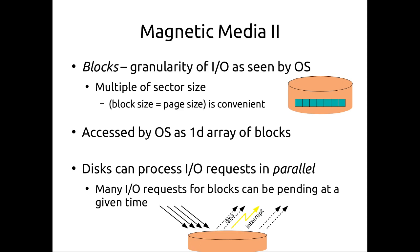The disk provides an abstraction to the OS as a 1D array of blocks — the teal array you see on the right. If we want to access the 12th block on a disk, we access the sectors corresponding to that data. Interestingly, a disk can process many I/O requests in parallel, so we want to send many requests at the same time, even before getting replies back, since disks can be very slow.